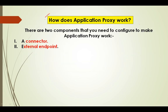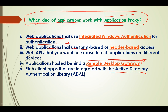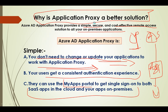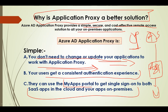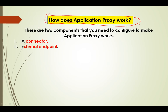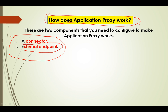Now let's look at how Application Proxy works. We've understood what Application Proxy is, what applications are supported, and what the benefits are. Now we'll see how it actually works. There are two very important components when configuring Application Proxy: the first is a Connector and the second is an External Endpoint. These are crucial components — if either is missing, this will not work.